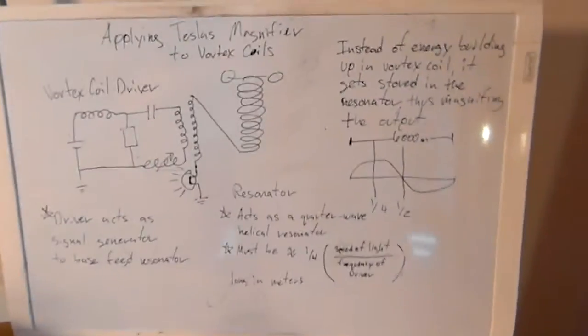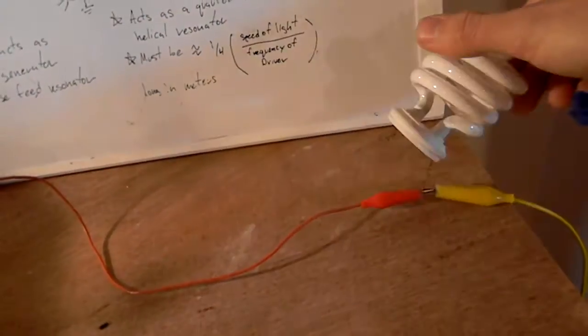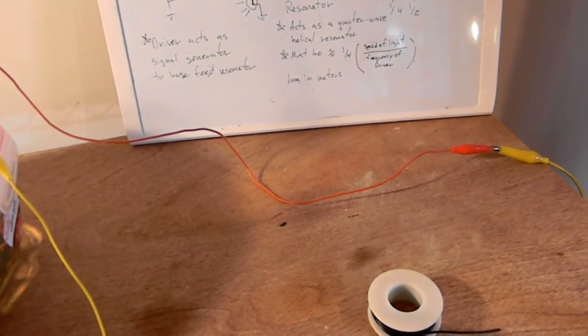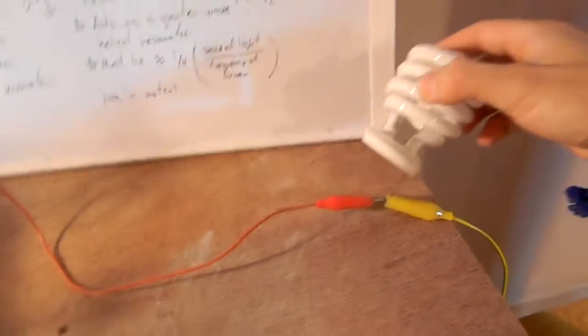Now it's called a Tesla magnifier. There's a lot of notes on here but basically this is the voltage we get of just the coil.